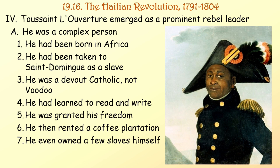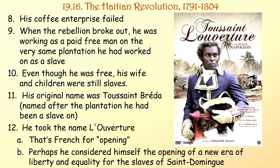Toussaint Louverture emerged as a prominent rebel leader. He was a complex person — born in Africa, taken to Saint-Domingue as a slave, a devout Catholic rather than voodoo, he had learned to read and write, was granted his freedom, and then rented a coffee plantation. He even owned a few slaves himself. His coffee enterprise failed, and when the rebellion broke out he was working as a paid freeman on the very same plantation he had worked on as a slave. His wife and children were still slaves. His original name was Toussaint Breda; he took the name Louverture — French for 'opening' — perhaps considering himself the opening of a new era of liberty and equality.